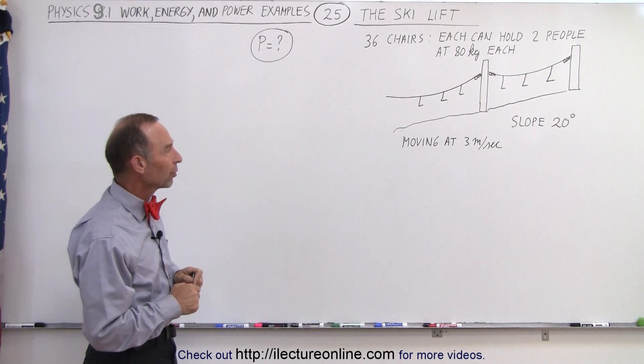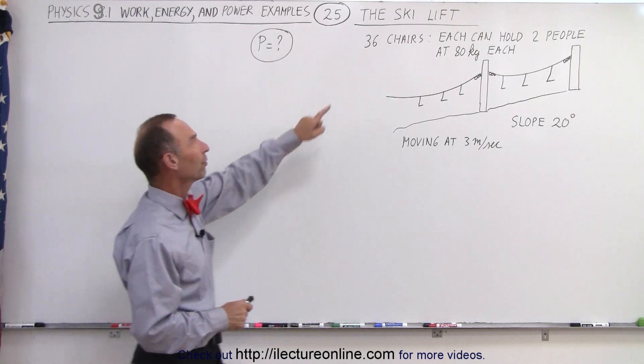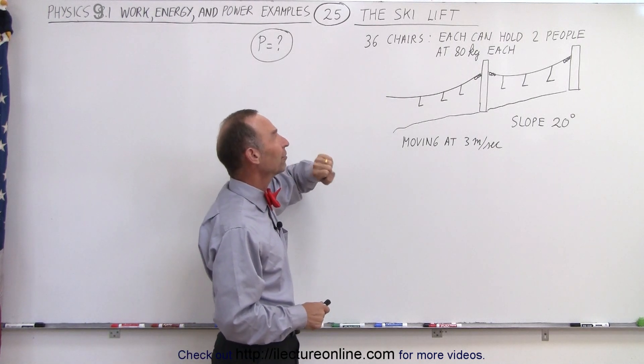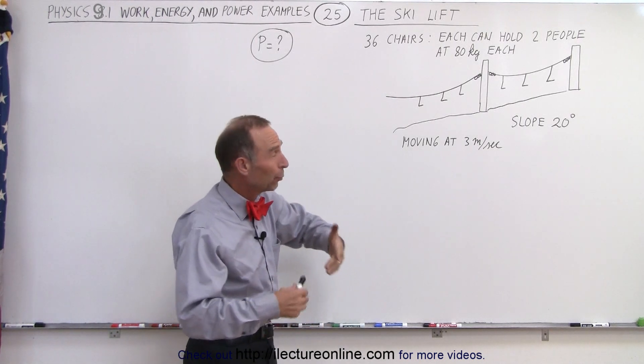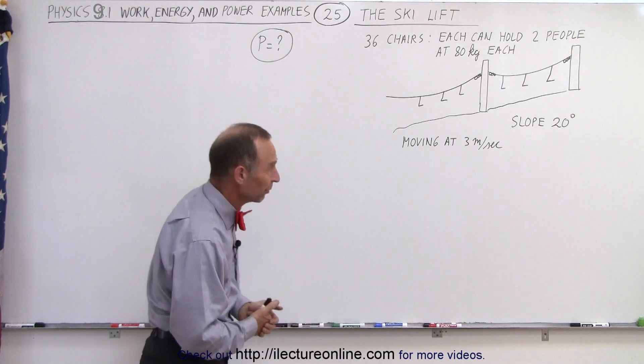The slope is about 20 degrees. The ski lift chairs are moving at 3 meters per second and there's a total of 36 chairs on the ski lift, each which can hold two people rated at 80 kilograms each. That's the mass of the person plus all the ski equipment.